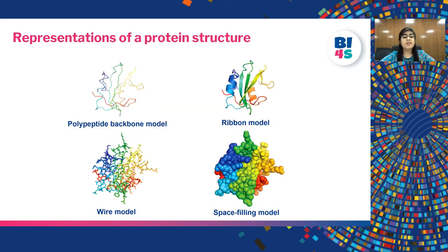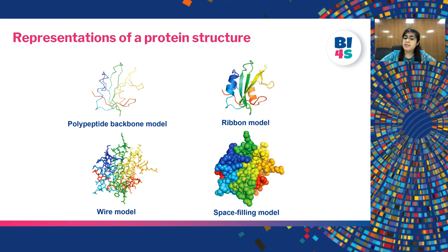Protein structures can be represented in many different ways depending on which features we want to examine. In the polypeptide backbone model, only the backbone is visible. In the ribbon model, alpha helices and beta sheets are visible. In the wire model, each line represents the bonds between amino acids — like a skeleton structure. In the space-filling model, each atom such as C and N is shown as a sphere, which is one of the best ways to describe the 3D structure of a protein.